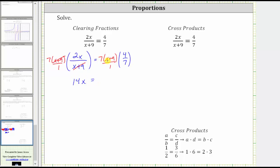On the right side, we have a common factor of seven. Seven divided by seven simplifies to one. We're now left with the quantity x plus nine times four, or if we want, four times the quantity x plus nine.